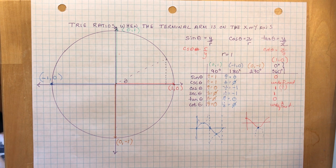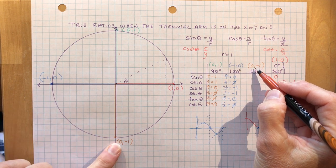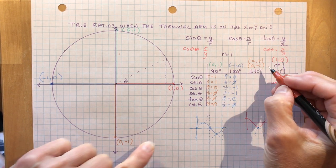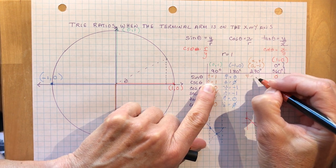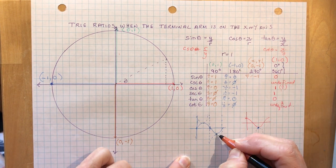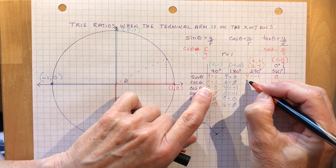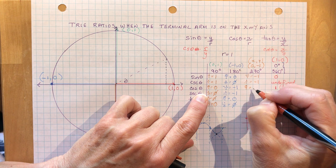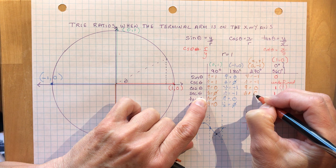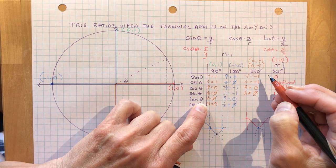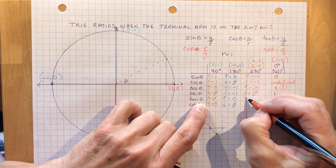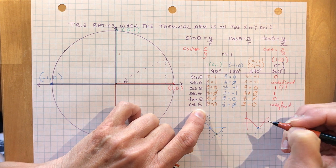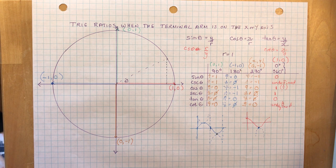Finally, at 270 degrees: X is 0, Y is negative 1, and R is 1. The sine of theta is negative 1 over 1, which is negative 1 — and you can check that on the graph. The cosecant is 1 over negative 1, same thing. The cosine is X over R: 0 over 1 is 0, but the secant is 1 over 0, which is undefined. The tangent is Y over X: negative 1 over 0, not defined. But the cotangent is X over Y: 0 divided by negative 1, which is 0. And there's your whole table of values for any trig ratios that lie on the X or Y axis.